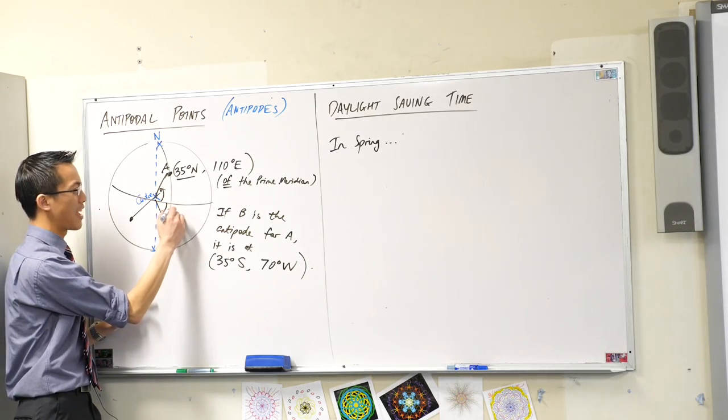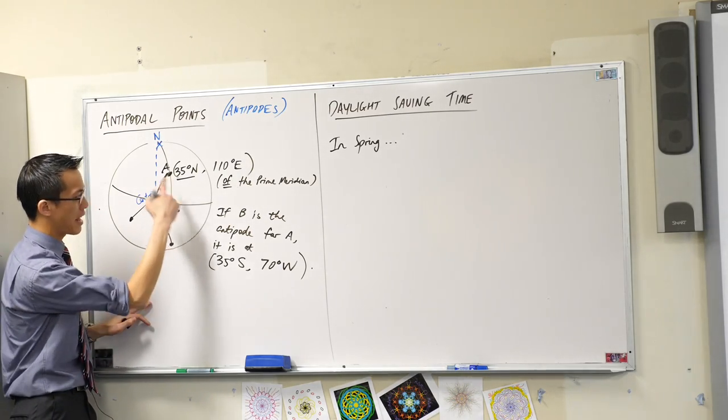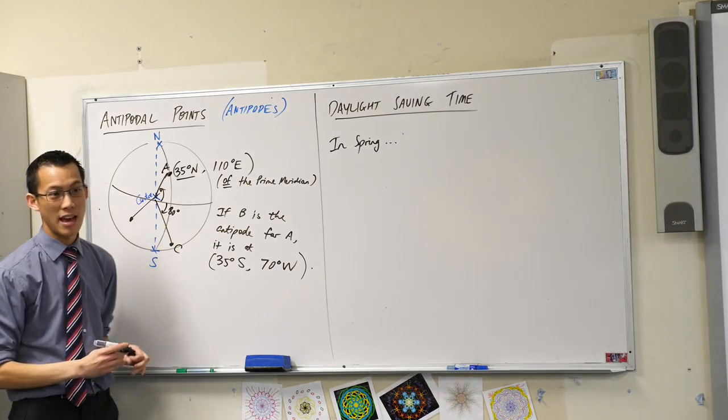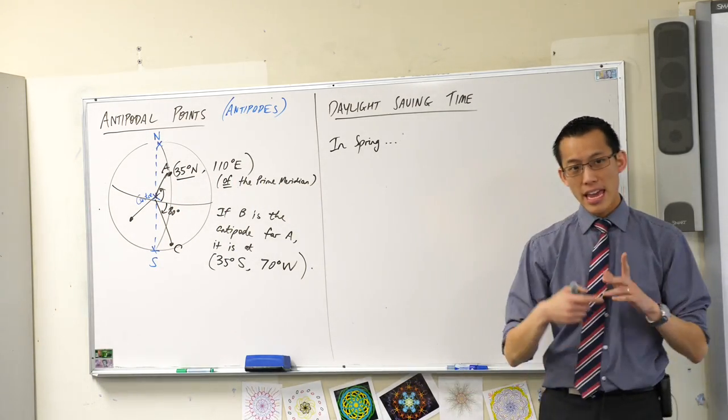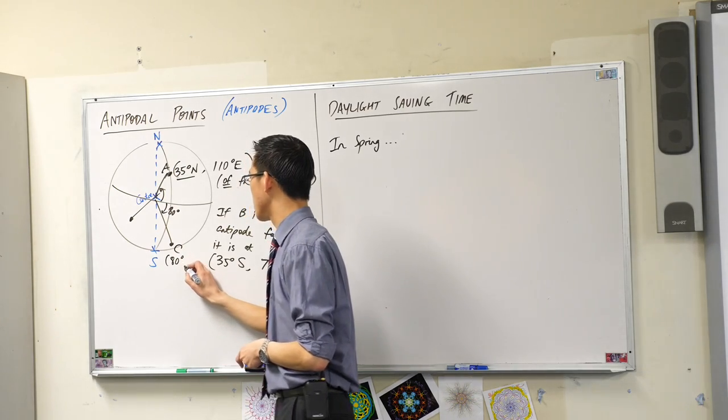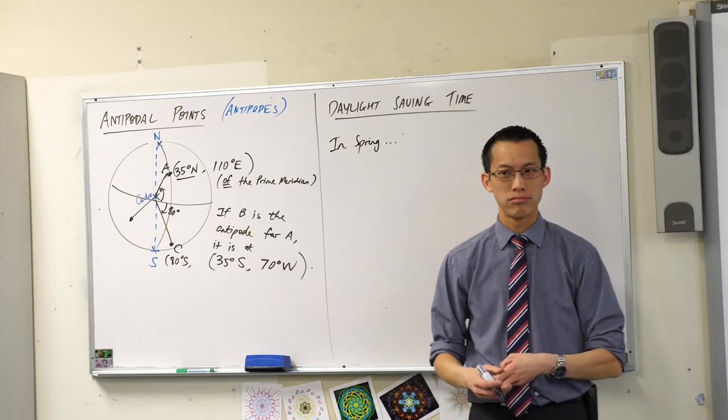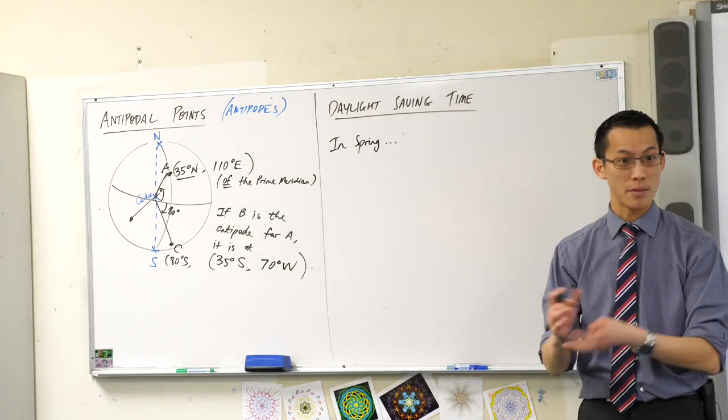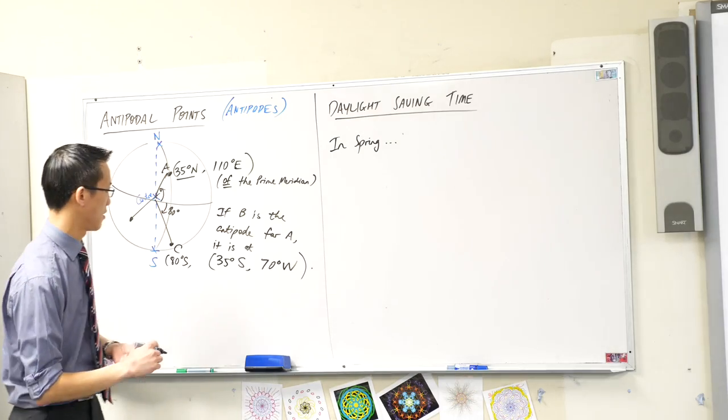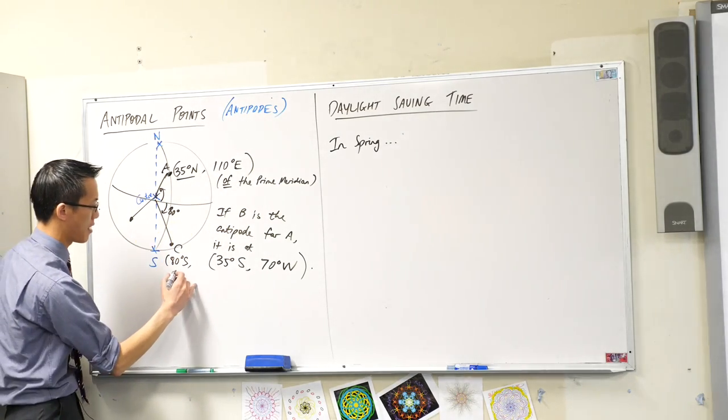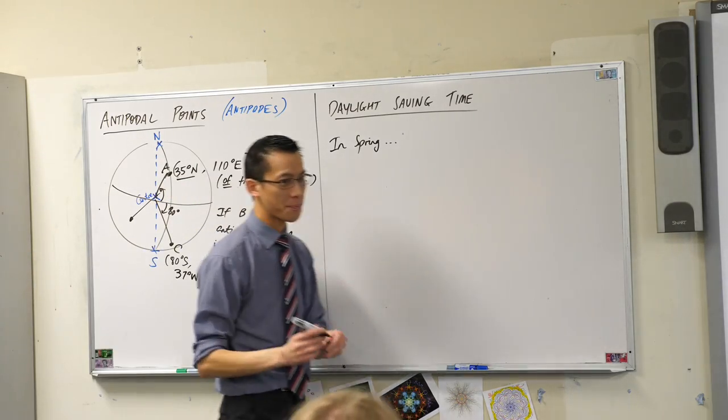So maybe something close to that is something like say 80. How about that? That's going to be in the Antarctic circle. Anyway, so you've gone 80 degrees down. Let's call this guy, I called that A and B. So let's call this C and we'll get an antipodal point called D. If C is at 80 degrees south and let's give it some other longitude. What would you like me to pick? Something west? How about 37 degrees west? Let's just call it there.